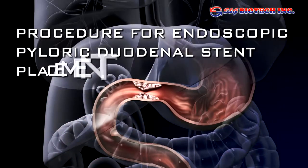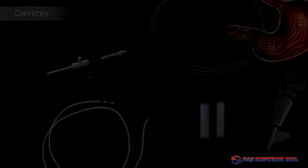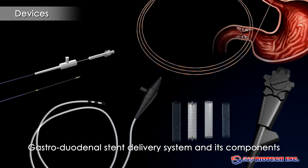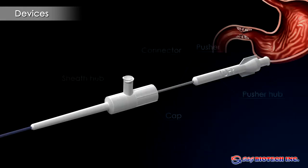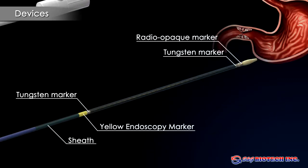Procedure for Endoscopic Pyloric Duodenal Stent Placement. This presentation illustrates endoscopic placement. Gastric outlet and duodenal obstruction is most commonly caused by pancreatic or gastric carcinoma, or metastases to the upper retroperitoneum. Aegis stents provide rapid and lasting relief of gastroduodenal obstruction.